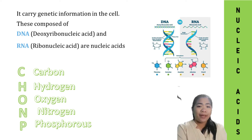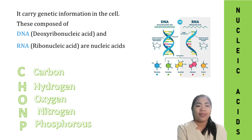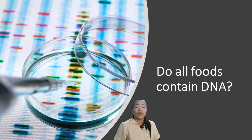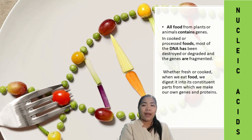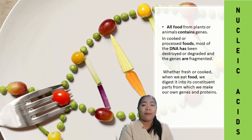The last type of biomolecules is nucleic acid. You are already familiar with nucleic acid, since it carries genetic information in the cell. These are composed of DNA and RNA. It contains carbon, hydrogen, oxygen, nitrogen, and phosphorus. Do all foods contain DNA, even cooked or processed foods? Most of the DNA has been destroyed or degraded and the genes are fragmented. Whether fresh or cooked, when we eat food, we digest it to its constituent parts, from which we make our own genes and proteins.